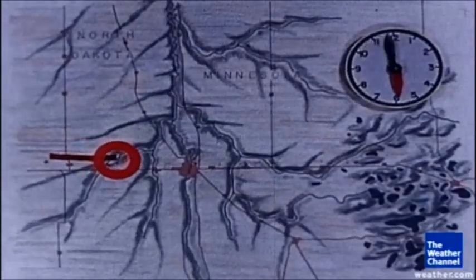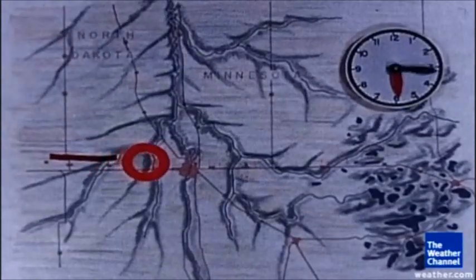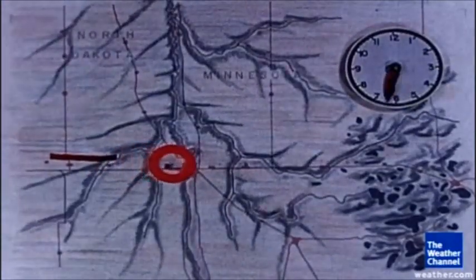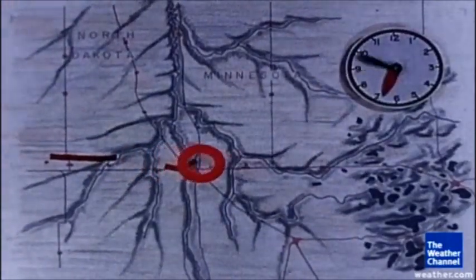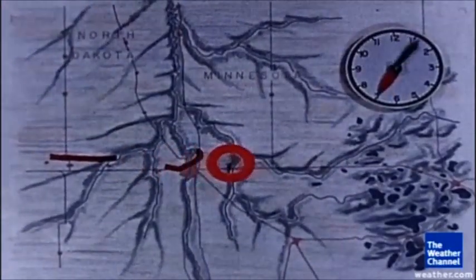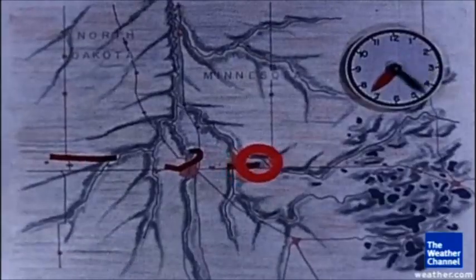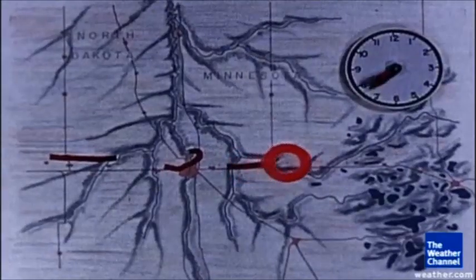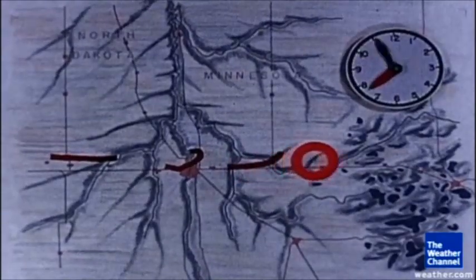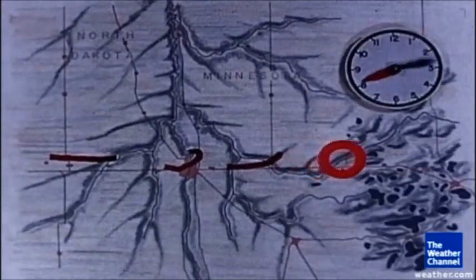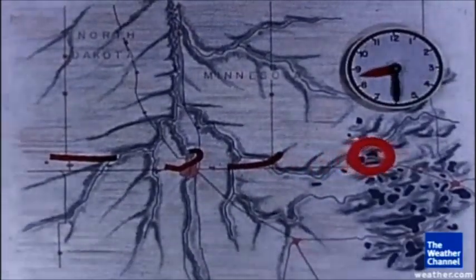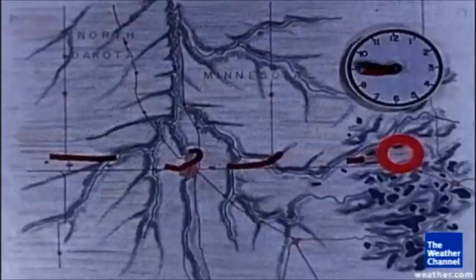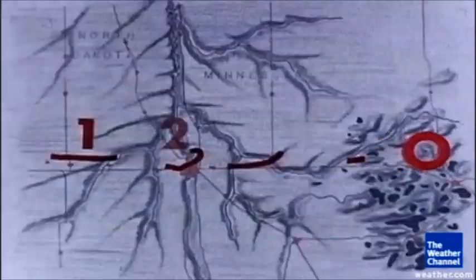This rotating thunderstorm produced a whole series of tornadoes one after another. A tornado would form, lift, the next one would form and lift. Fujita called those a family — we still use that term today.